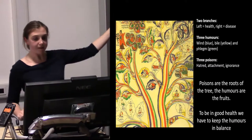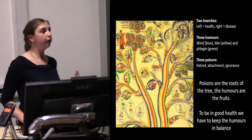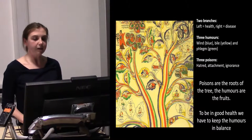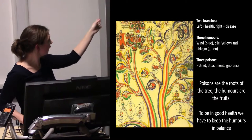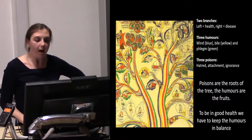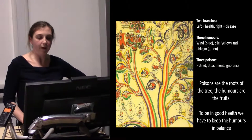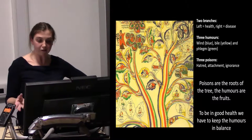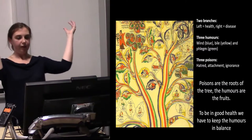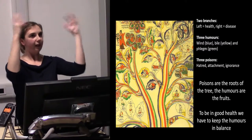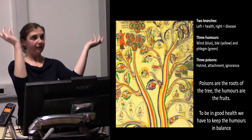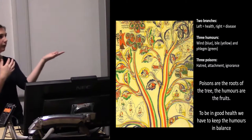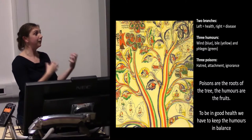The tree itself has two branches: off to the left we have health, and off to the right we have disease. We have the three humors within this — wind is blue, bile is yellow, phlegm is green — and they appear in both branches. There are also three poisons, which are the roots of the tree: hatred, attachment, and ignorance. The humors are the fruits of the tree and they counteract the roots. To be in good health we have to keep the humors in balance, and one of the ways we can do that is through consuming things.